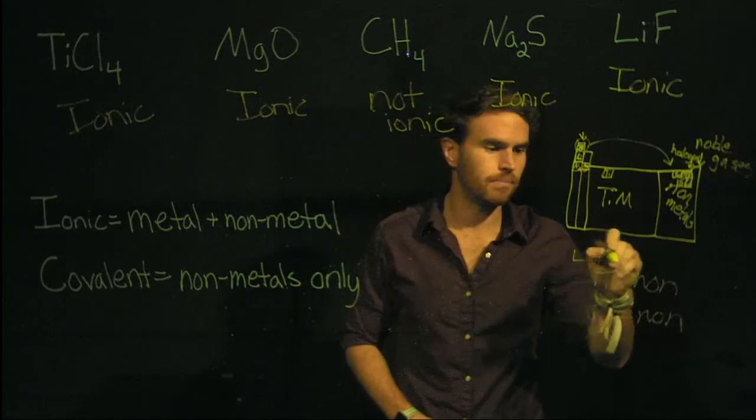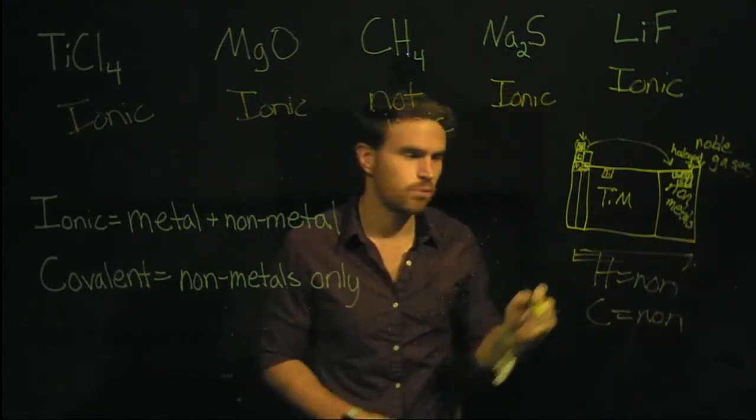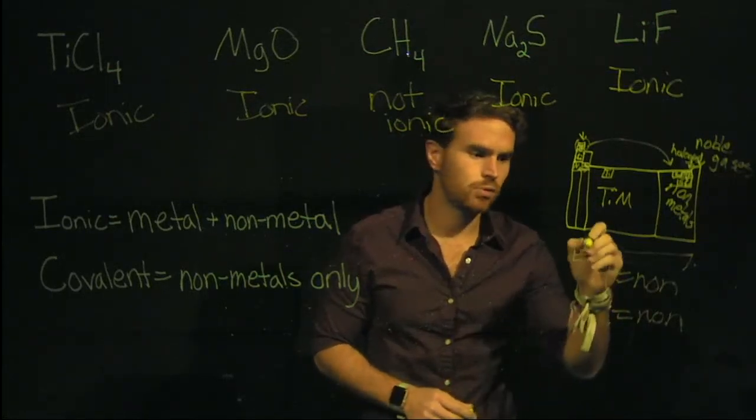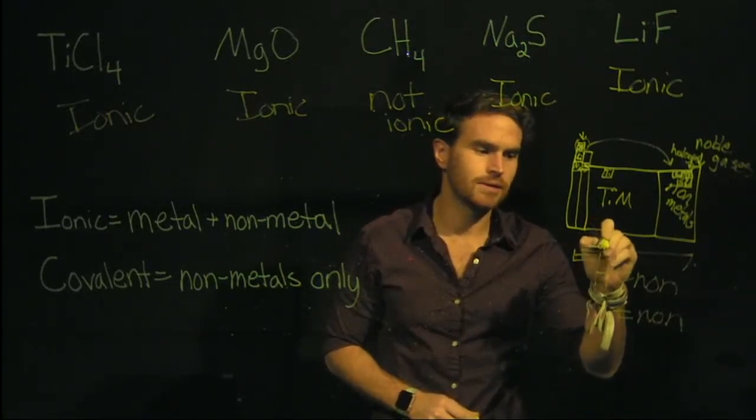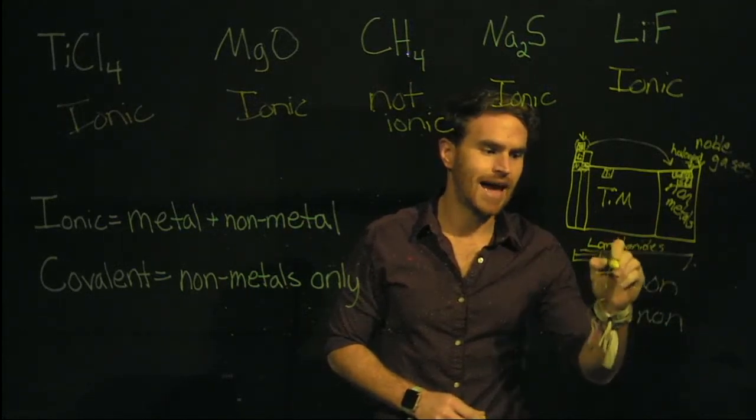And then the bottom two rows on a periodic table that is kind of set off to the side on a periodic table. Those are the lanthanides and the actinides.